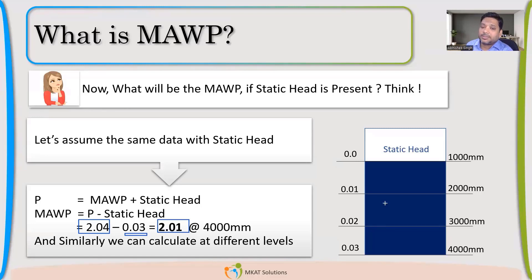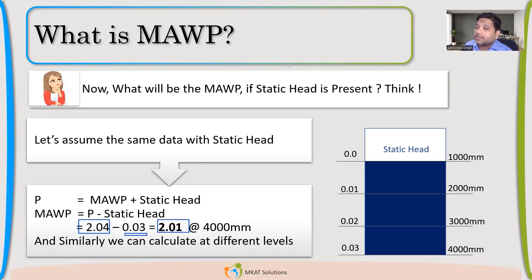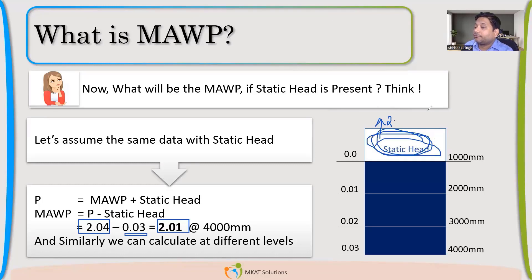The pressure-taking capability of the vessel hasn't actually changed — what matters is where we are measuring it. If we are measuring that pressure-taking capability at the topmost part, that is the zone where pressure will be applied. Whatever pressure we are talking about will be applied there.